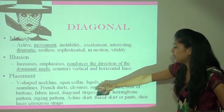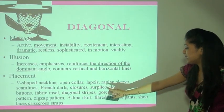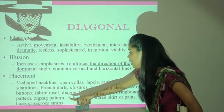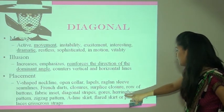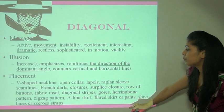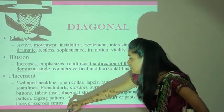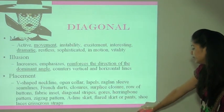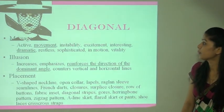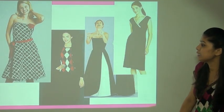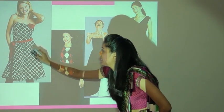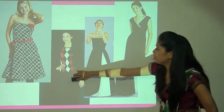Placements for diagonal lines include V-shape necklines, open collars, lapels, raglan sleeves (wider at the front of the sleeves), seam lines, French darts, closures, rows of buttons, fabric inserts, diagonal strips, gores, herringbone (a kind of embroidery) patterns, zigzag patterns, A-line skirts, flared skirts, pants, shoes, laces, and criss-cross straps. These show the use of diagonal lines on plain fabric in various directions.